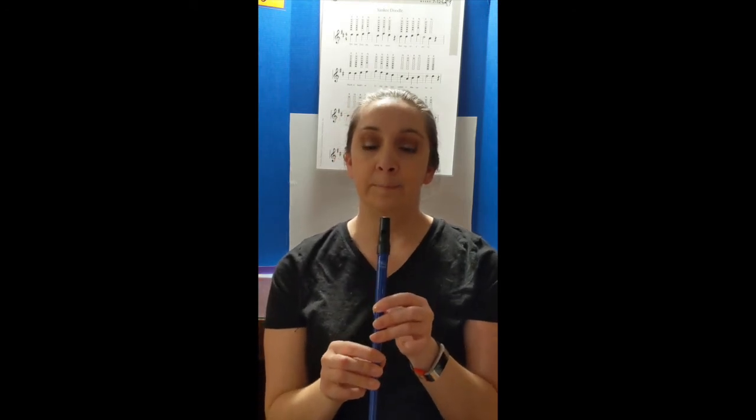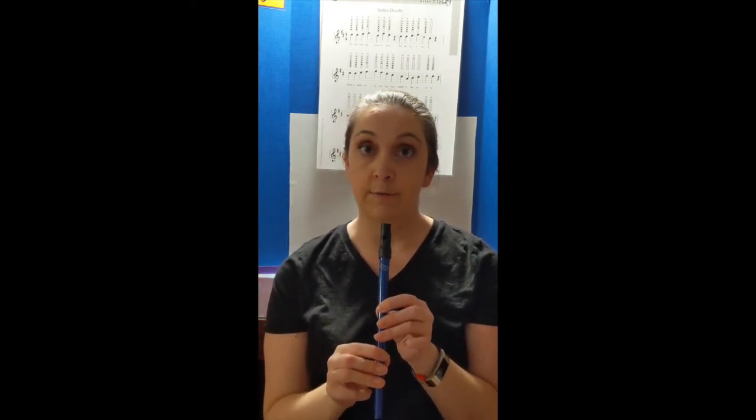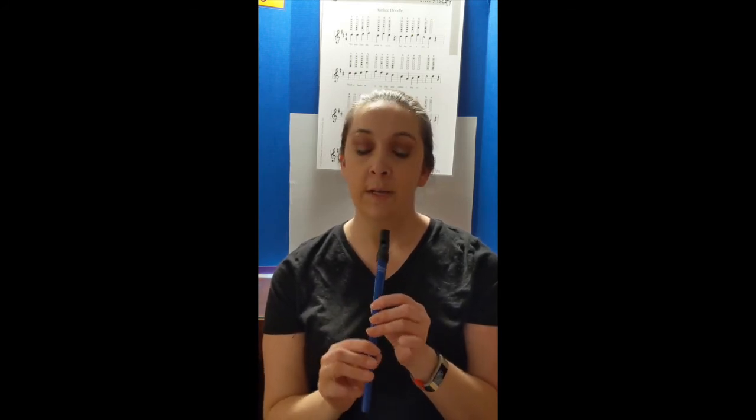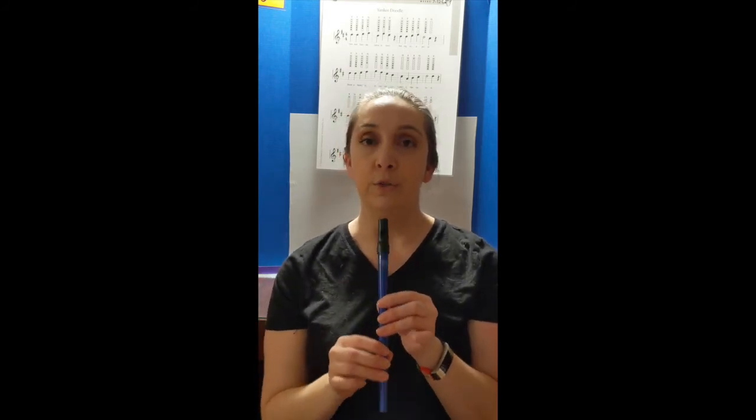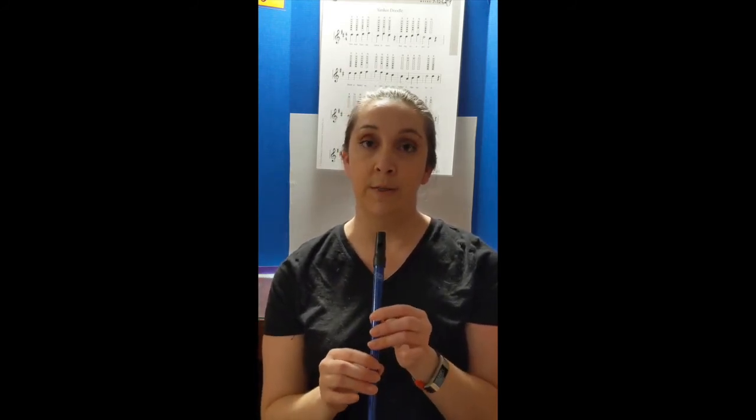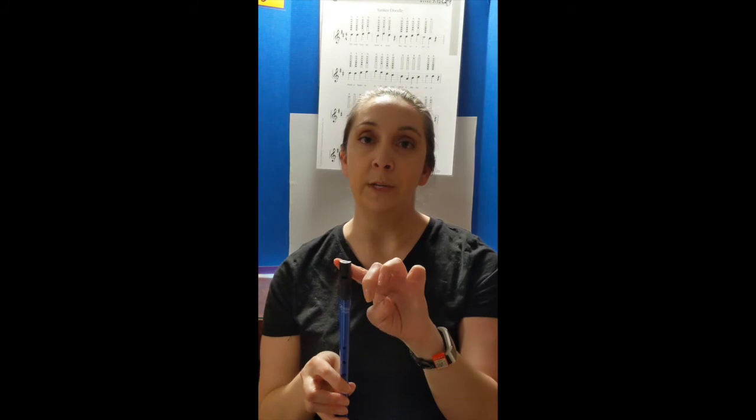The last note we'll go over is C sharp. C sharp is the note where none of the holes are covered — all six fingers should be off the holes. It can be tricky. What you can do to hold your tin whistle with all holes uncovered: take your pinky and rest it on the bottom. Remember the whistle is going to be in your mouth, so you have a balance point at the top and a balance point at the bottom.